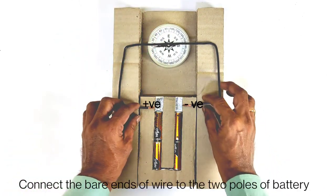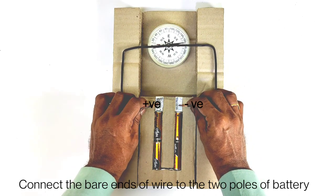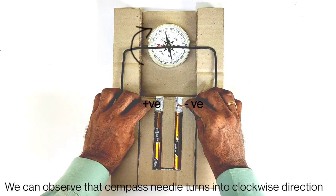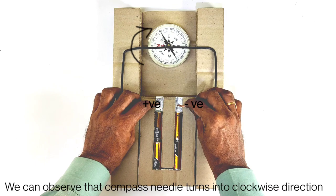Connect the bare ends of the wire to the two poles of the battery. We can observe that compass needle turns into clockwise direction.